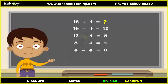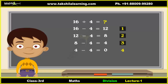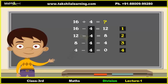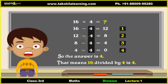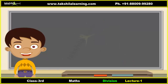Let us now see how many fours have been subtracted: one, two, three, four. Four fours have been subtracted, so the answer is four. That means sixteen divided by four is four.